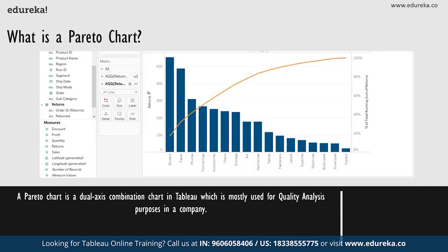So what is a Pareto chart? A Pareto chart is basically a dual axis combination chart in Tableau. On its primary axis, bars are used to show basic raw quantities for each dimension, usually sorted in descending order. On a secondary axis, a line graph is then used to show the cumulative total in a running percentage format. This chart type is most known for being a part of the seven basic tools of quality control, and is traditionally used to identify the biggest opportunities for improvement.